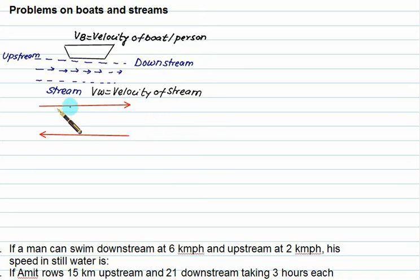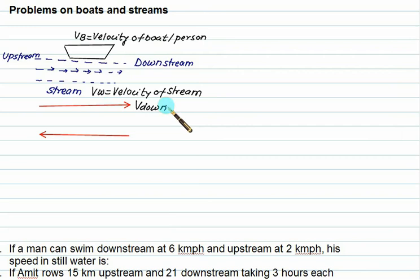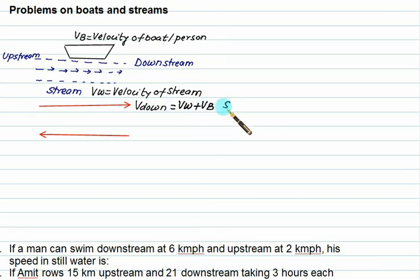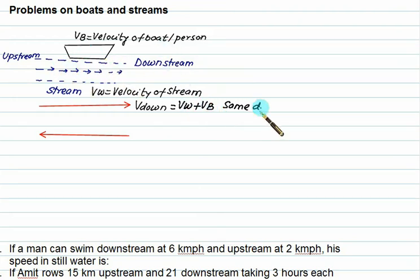When you are moving downstream, this speed is called velocity of down. The boat is going this way, so the velocity of stream plus velocity of boat are added because they are in the same direction. Relative velocity concept does not apply here — this is an advantage because the water is also moving and the boat is also moving, so you add them: same direction.